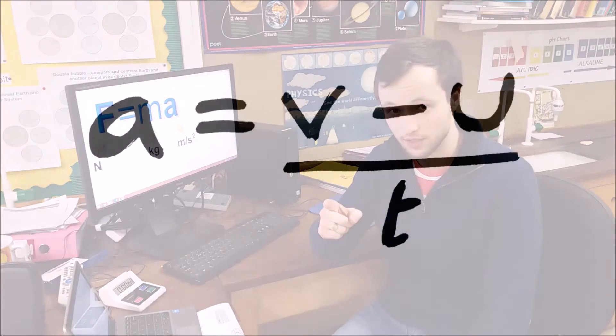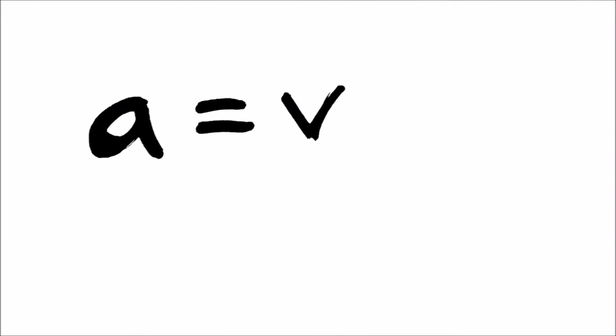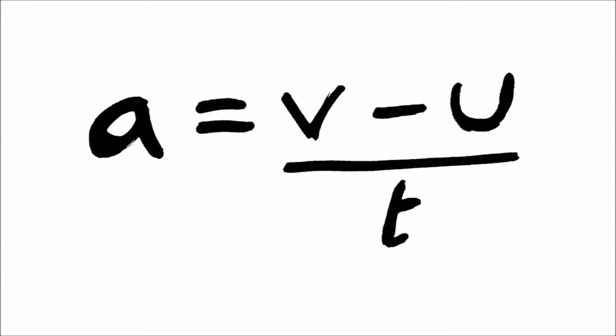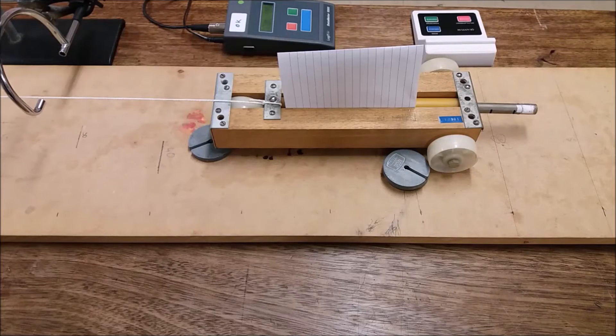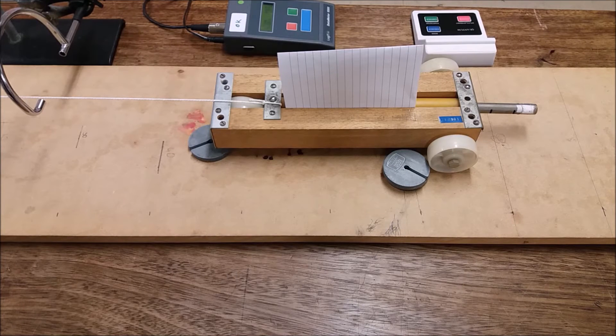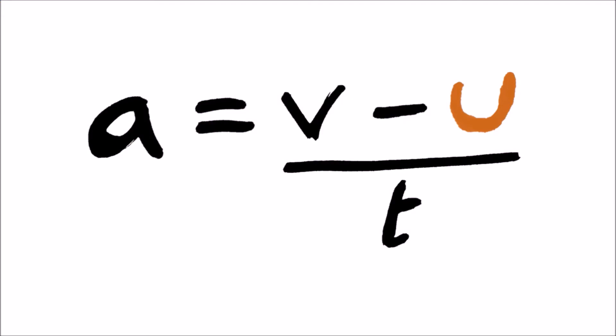Acceleration is given by this equation, which is the final velocity minus the initial velocity, then all of that divided by the time it took to go from the first velocity to the final velocity. I've cheated a bit here, and I'm starting my trolley from rest, so my initial velocity equals zero.